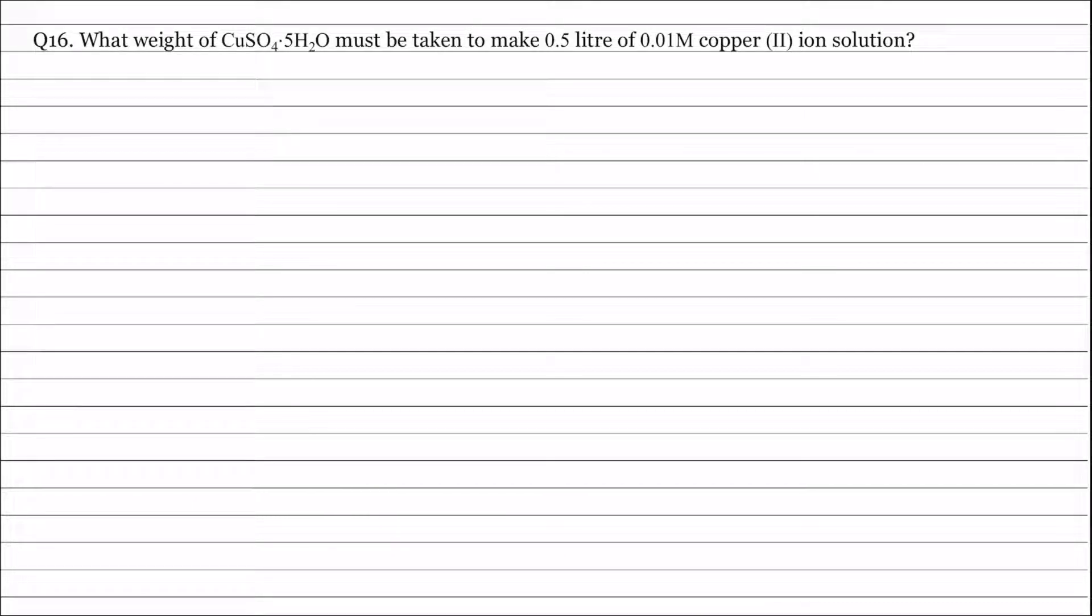Question 16: What weight of CuSO4·5H2O must be taken to make 0.5 litre of 0.01 M copper(II) ion solution? The volume of the solution is 0.5 litre and the molarity is 0.01 M.